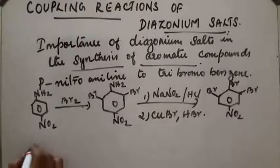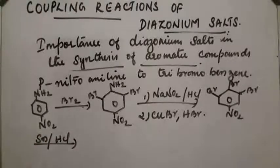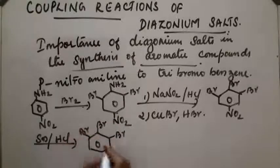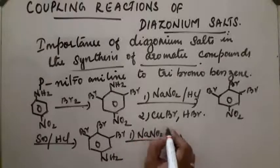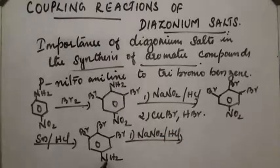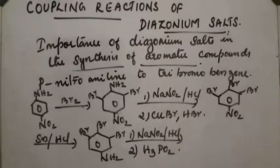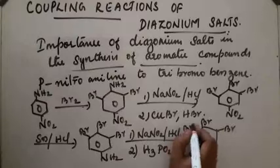Next, on reduction, NO₂ gets converted into NH₂ using tin (Sn). A compound with an NH₂ group is obtained. Then we have to remove this NH₂, so again diazotization is performed. Then NH₂ is converted to N₂⁺Cl⁻, followed by reaction with H₃PO₂ for replacement by hydrogen. The NH₂ gets removed, and the product will be 1,2,3-tribromobenzene. Like this, we can prepare tribromobenzene in pure state, which cannot be done by direct bromination of benzene.